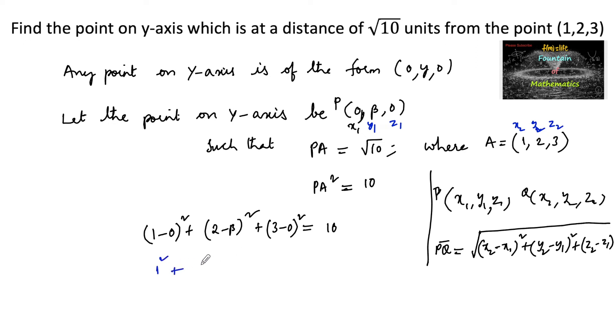So, 1 square plus (2 minus beta) whole square. By using (A minus B) whole square: 2 square is 4 plus beta square minus 2AB, that is minus 4 beta, plus 3 square is 9, which is equal to 10.